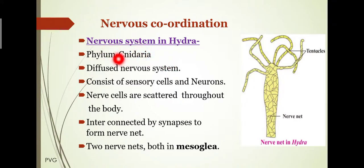This animal belongs from the phylum and it shows the diffused nervous system. This is the most primitive nervous system. This animal consists of sensory cells and neurons or nerve cells along with their fibers. These nerve cells are scattered or distributed throughout the body and interconnected with each other by synapse between their fibers to form a nerve net.